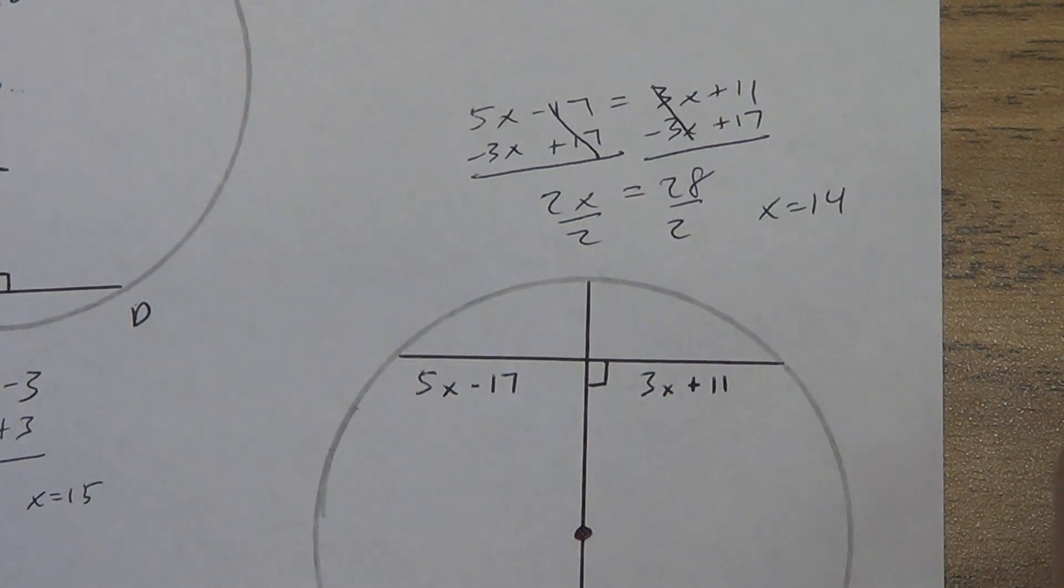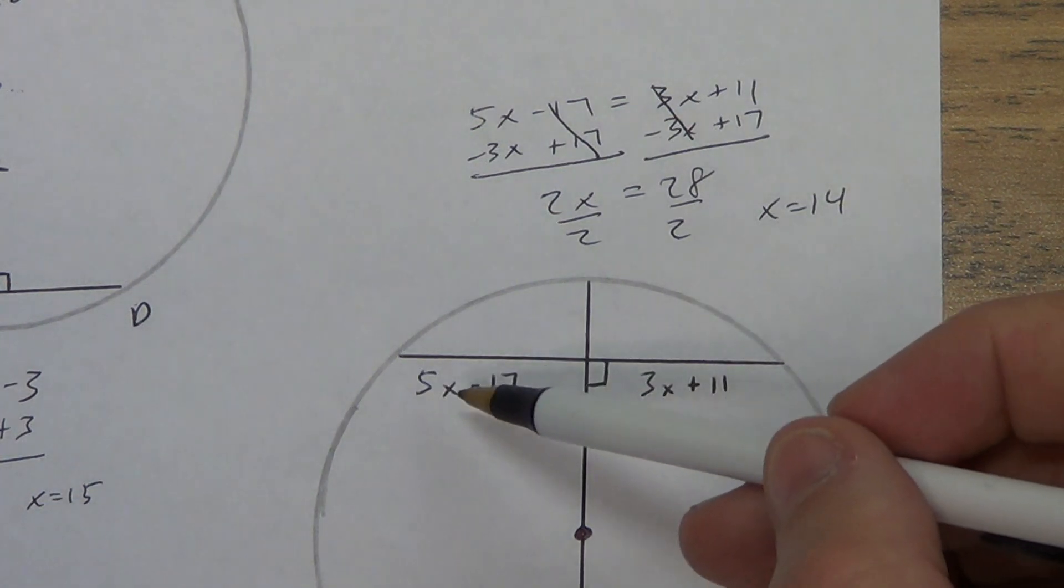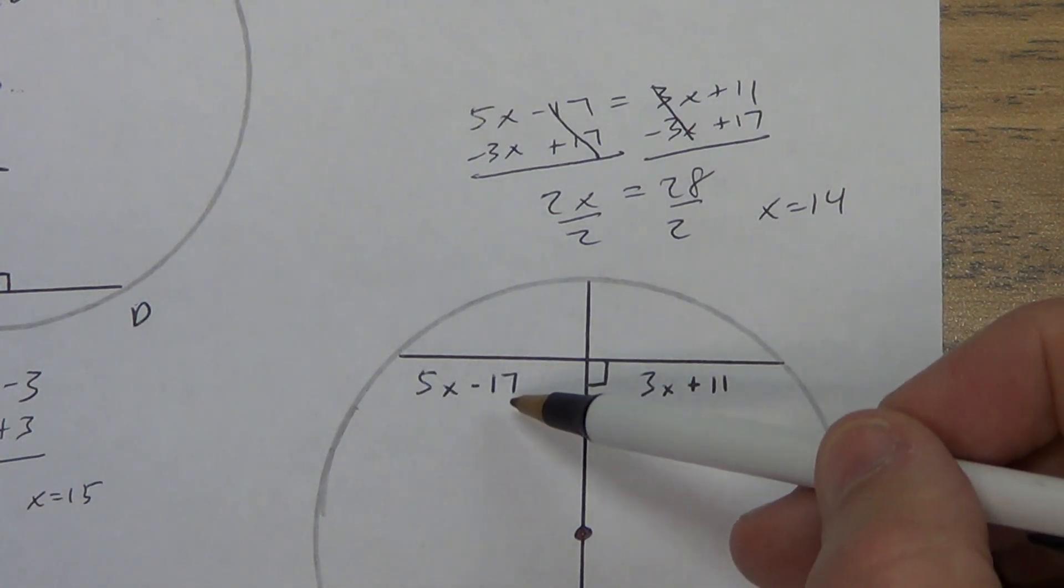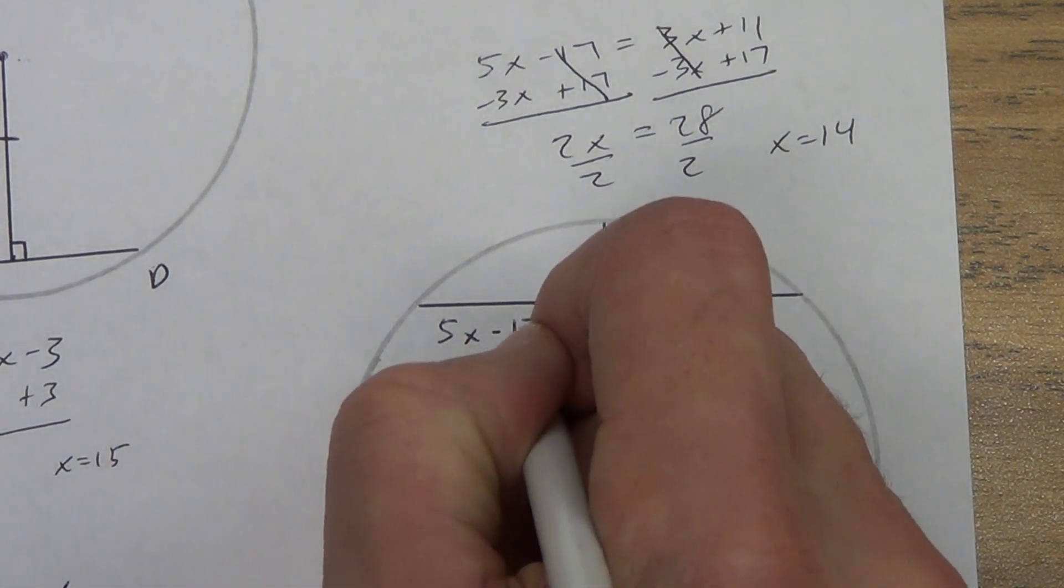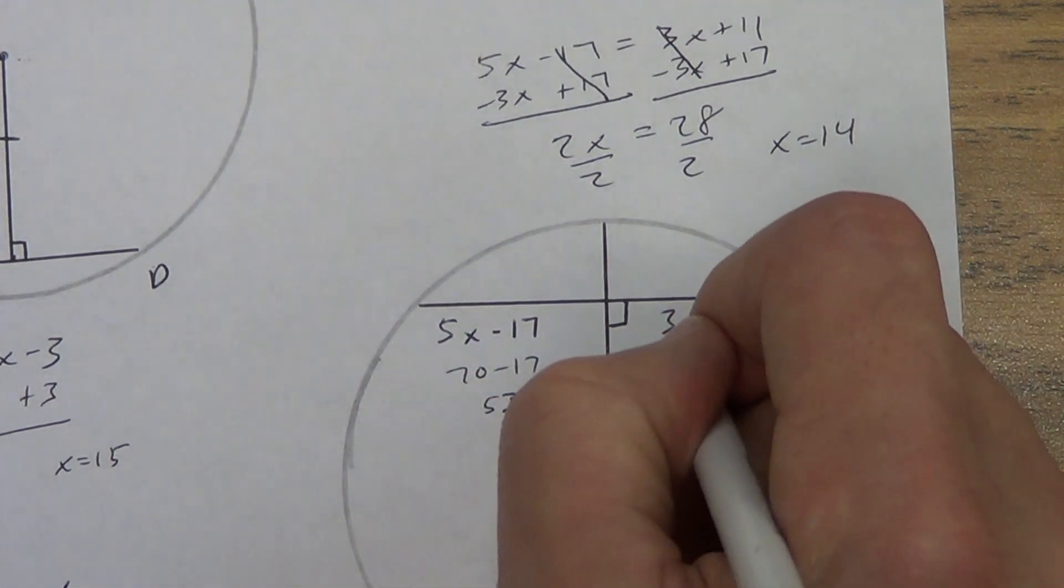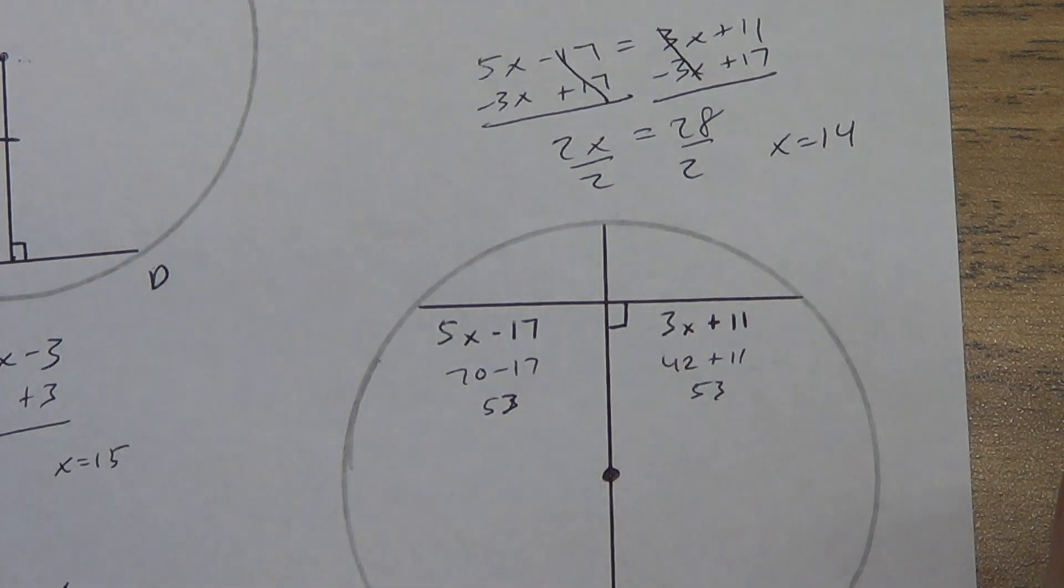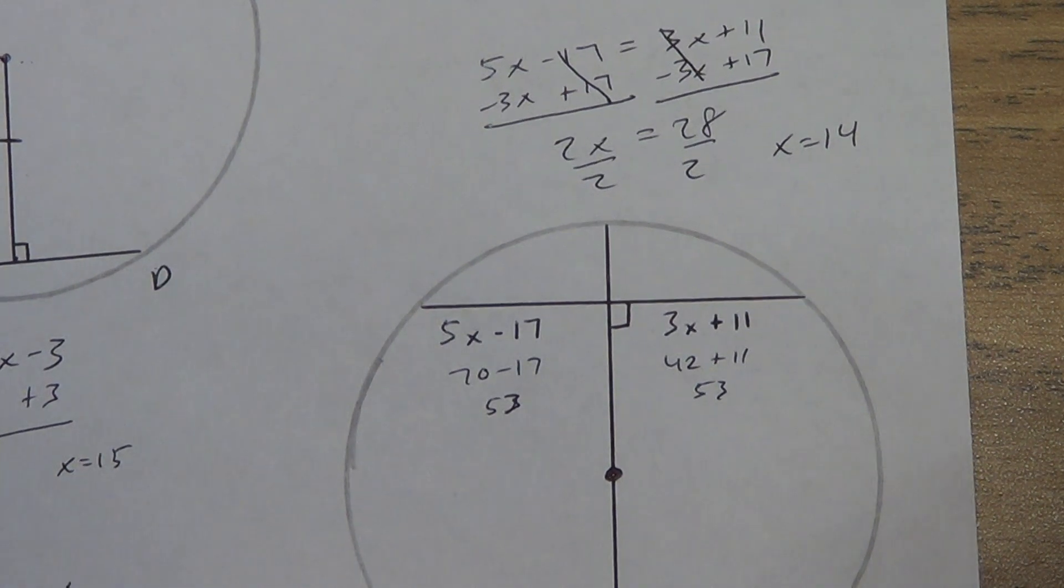I get x equals 14. Now that seems kind of big. We don't have a label here, so we'd put units. But that seems kind of big, so let's check it. 5 times 14 is 70. 70 minus 17 is 53. 3 times 14 is 42. 42 plus 11 is 53. So it does check.